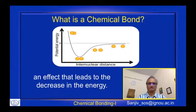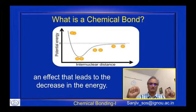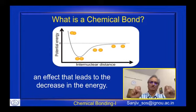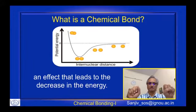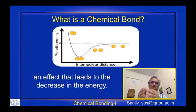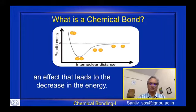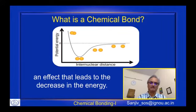To put it simply: if atom one has 10 units of energy and atom two has 10 units of energy, the total is 20 units. If when the two come closer the total energy becomes less than 20 units, then we say bond formation has occurred. Essentially, a chemical bond is nothing but some process that leads to a decrease in the energy of the system — the system being the two atoms which are combining.